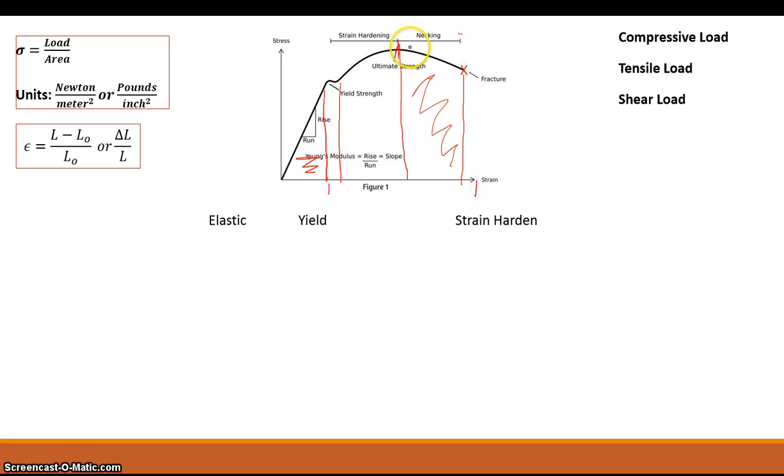From that point, it goes down to this necking stage where the more strain, the less stress it's able to handle. It literally will start to neck down, which kind of goes back to this original equation—the smaller the area, the greater the stress, until finally you get a rupture.